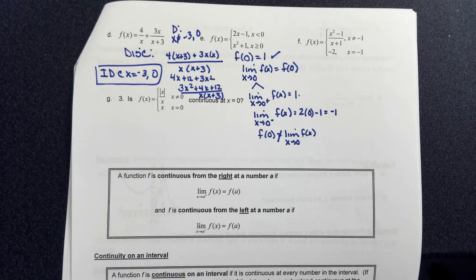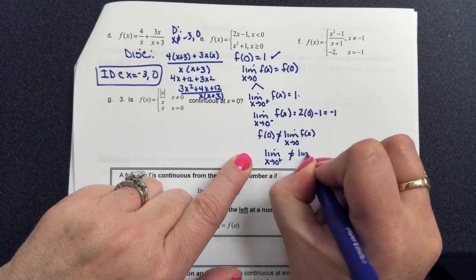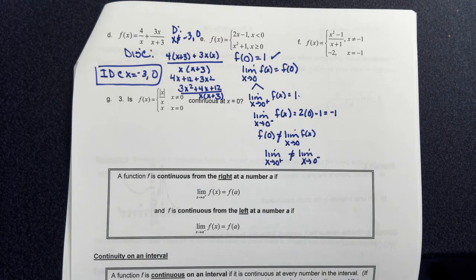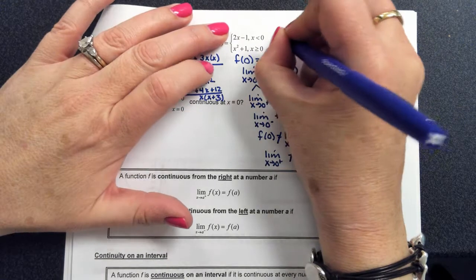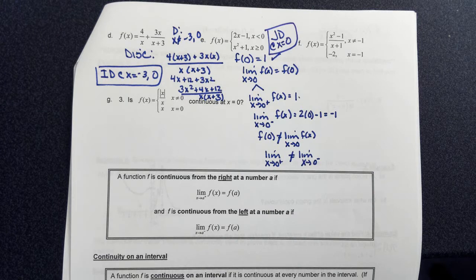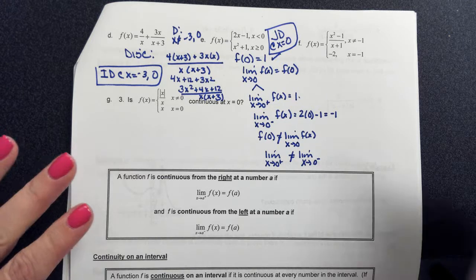When the limit from the left does not equal the limit from the right, we have a jump discontinuity. So there is a jump discontinuity at x = 0, which is non-removable. Remember: what makes a jump is that the left limit does not equal the right limit. What makes removable discontinuity is that the limits are the same on both sides, but the defined value is different or doesn't exist.